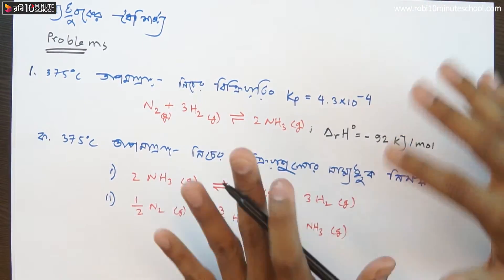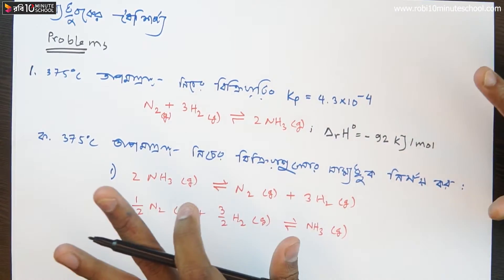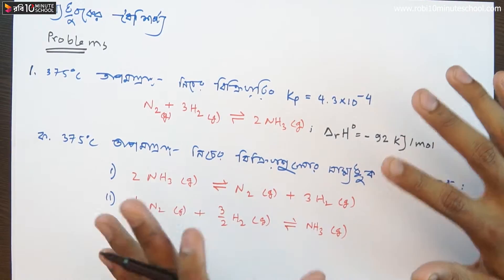Now we have another problem. This is the first question at 35 degrees Celsius for the reaction, and you need to find the Kp value.